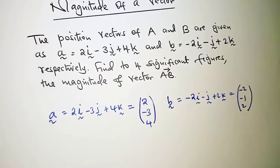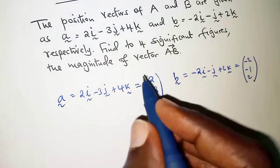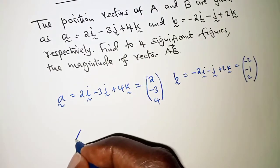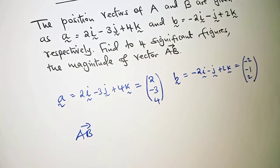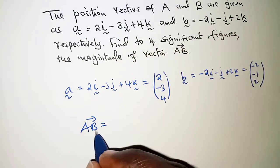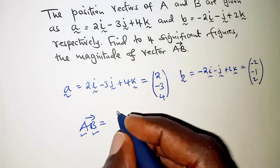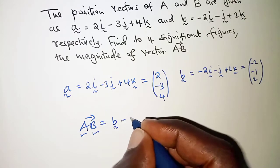From this we can determine the value of AB before we get its magnitude. AB should be the position vector of B minus position vector of A, that is B - A.